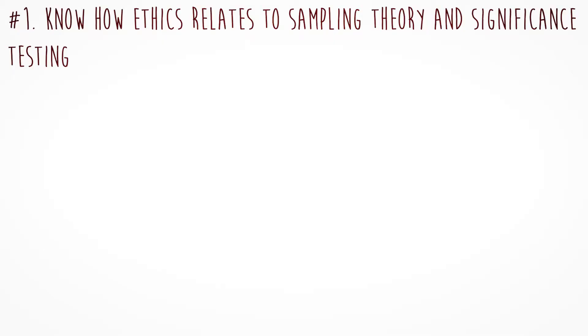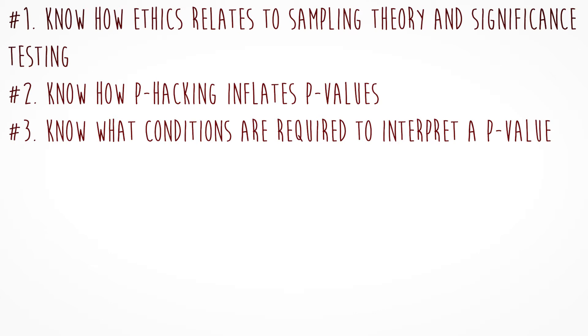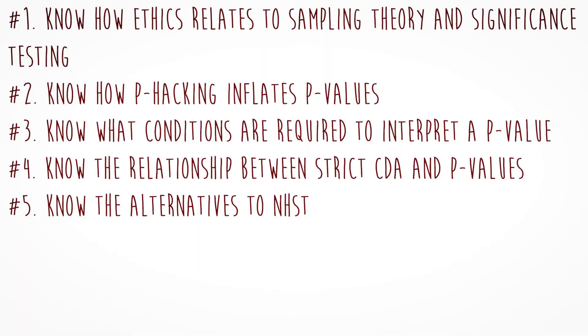Let's review our learning objectives. Number one: understand how ethics plays a role in sampling theory and null hypothesis significance testing — if we had to roll the dice multiple times to get significance, we need to be honest and transparent about that, and we shouldn't even report a p-value in that case. Number two: understand how p-hacking inflates p-values — it's just rolling the dice multiple times. Number three: understand the conditions required for correctly interpreting a p-value — only one test, meet all statistical assumptions, fix sample size before collecting data. Number four: know the relationship between strict CDA and p-values — strict CDA means you've met all these conditions, in which case you can actually interpret a p-value. Finally: understand the alternatives — estimation, graphical data analysis, Bayesian statistics, and model comparisons.